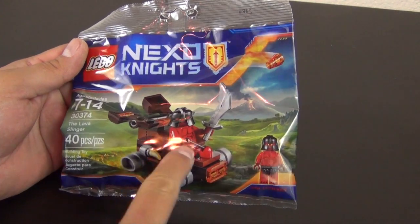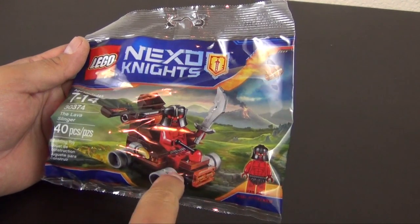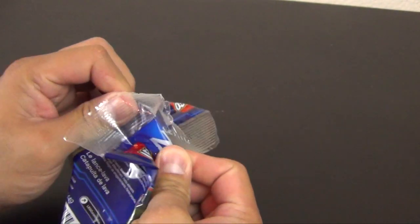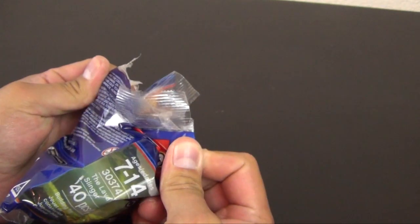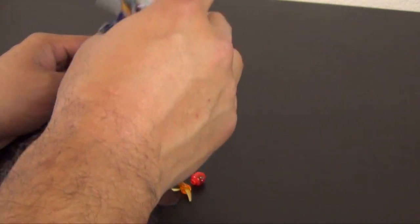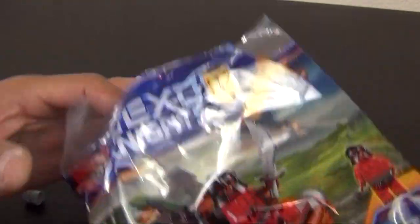So I really dig the enemies for the Nexo Knights, kind of the red colored guys. So it should be a fairly simple little build. Only 40 pieces.